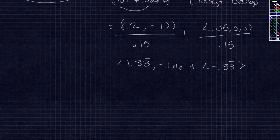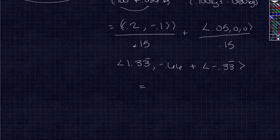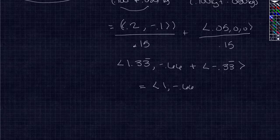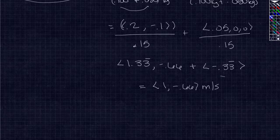For our total meters per second, we are going to go 1 in the x direction and negative 0.66 in the y direction. And that is our answer for both pucks. Thank you.